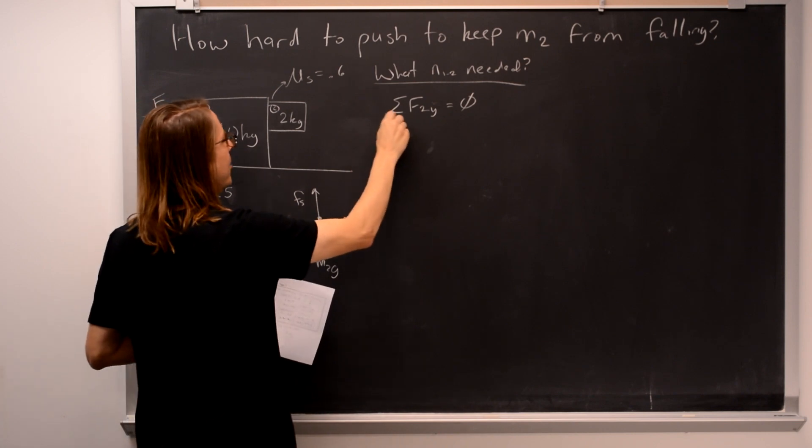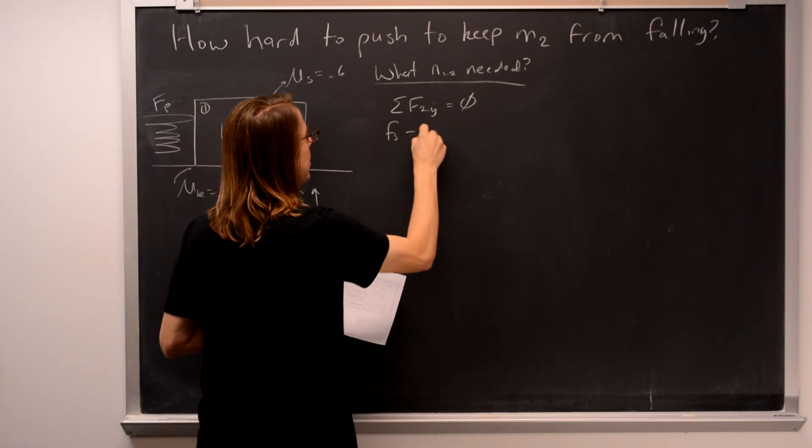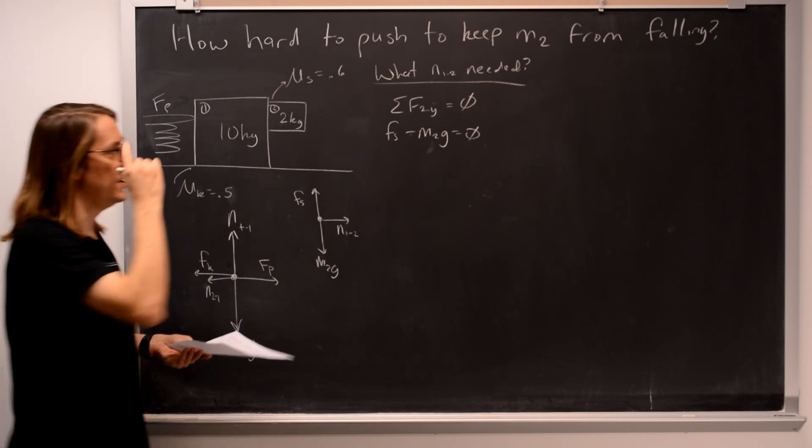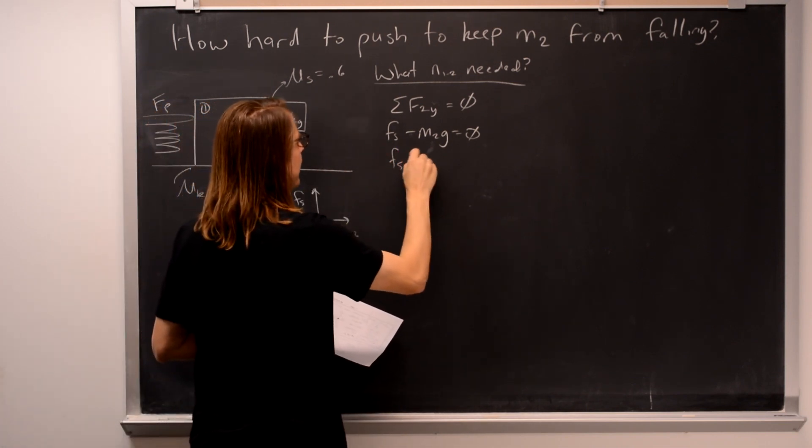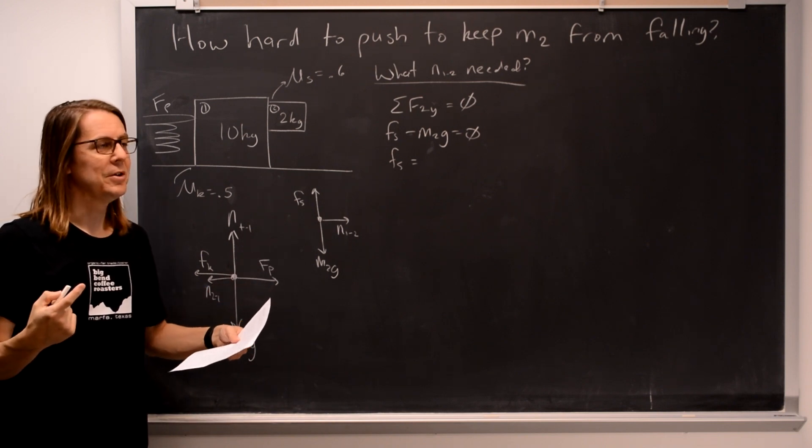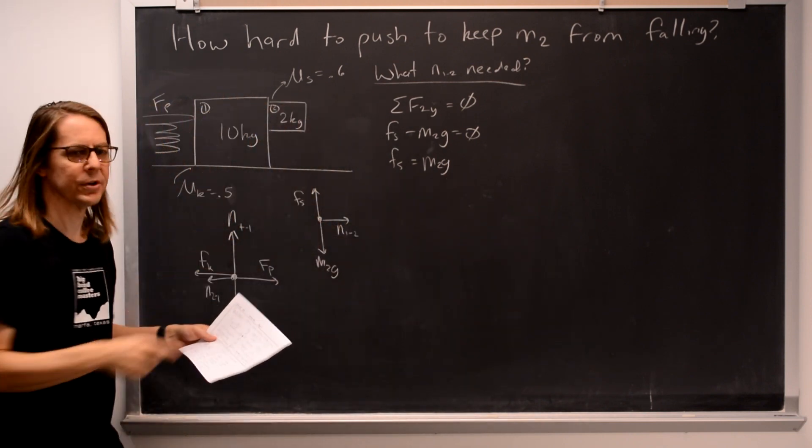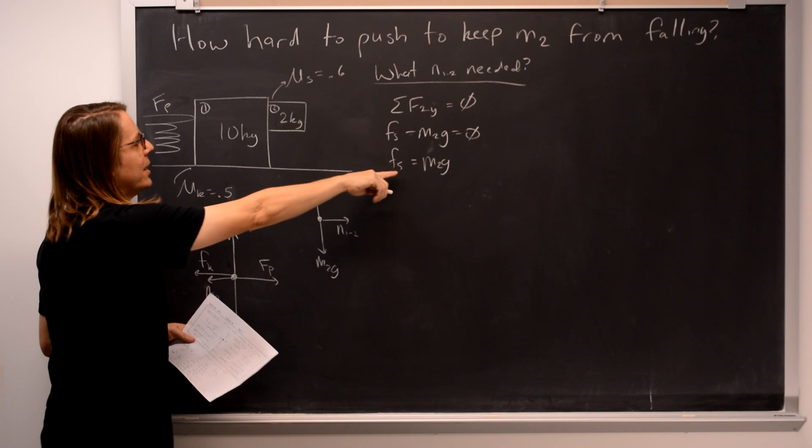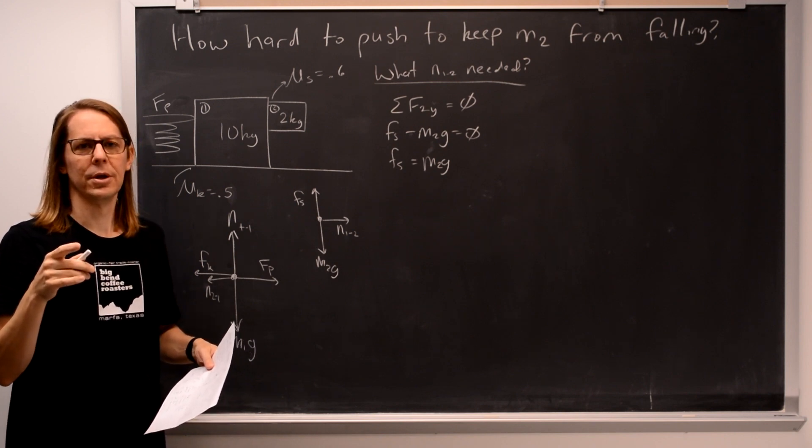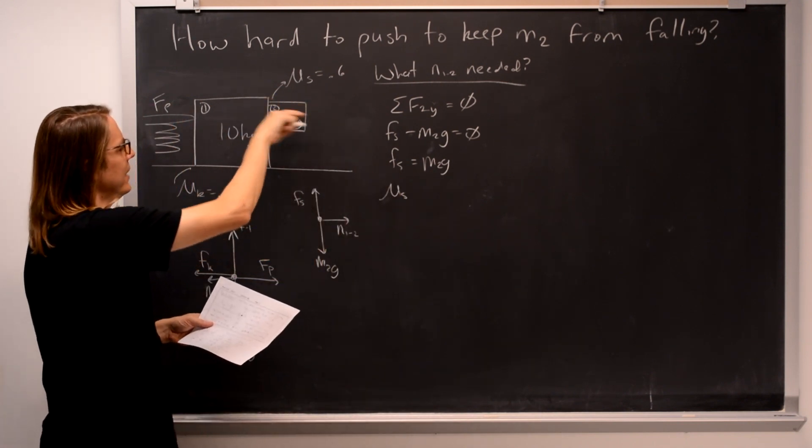In the y, we have Fs up. So the magnitude of the static friction force is up minus M2g down equals 0. So in this case, all we really need is for the static friction to equal the weight of the second mass. So it's M2g. That's the magnitude of the friction force that we need. What we want to do is go ahead and plug in for the friction force. It's equal to mu static times the normal. So the static coefficient of friction times the normal force of N1,2.